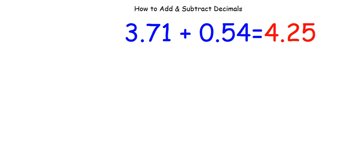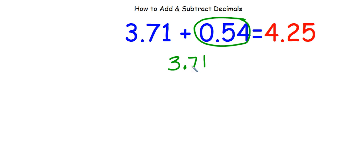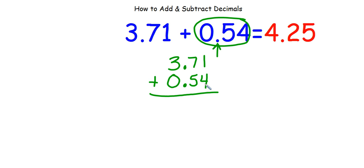We just figured out the answer to this problem was 4 and 25 hundredths using a model. But there's a faster way — lining up the decimal points. To add without models, write the first number, 3 and 71 hundredths, then write the second number directly underneath, lining up by the decimal point. Adding normally: 1 plus 4 is 5; 7 plus 5 is 12, write the 2 and carry the 1; bring down the decimal; and 1 plus 3 plus 0 is 4. Same answer — you can check you've done the problem correctly.